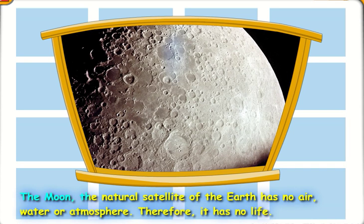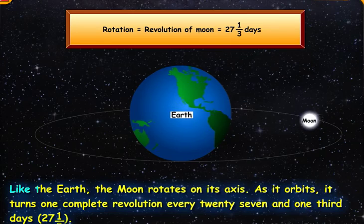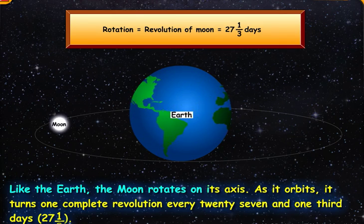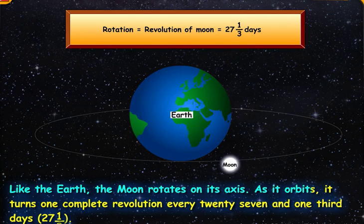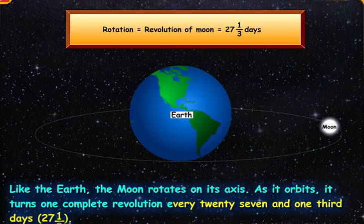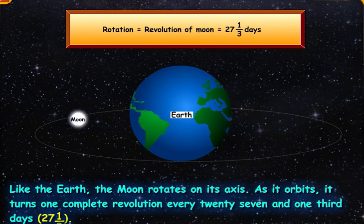The moon, the natural satellite of Earth, has no air, water, or atmosphere. Therefore, it has no life. Like the Earth, the moon rotates on its axis. As it orbits, it completes one complete revolution every 27 and one-third days.